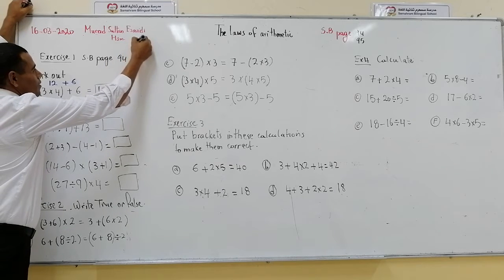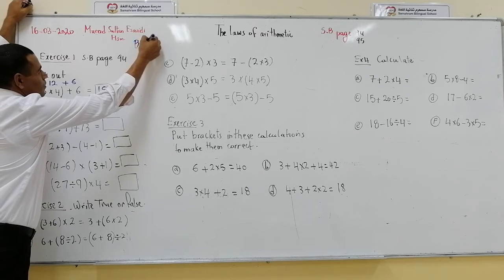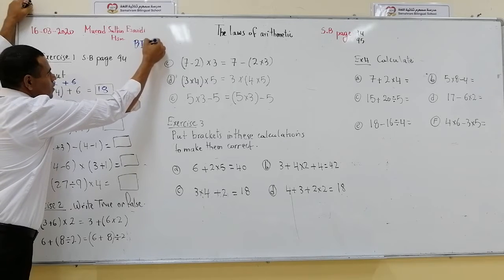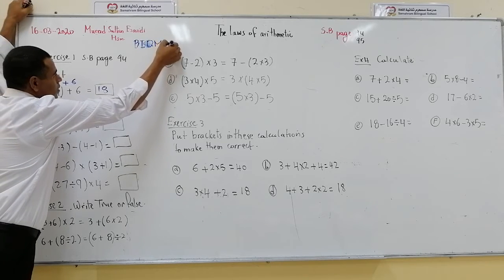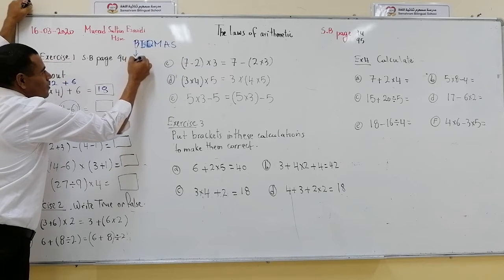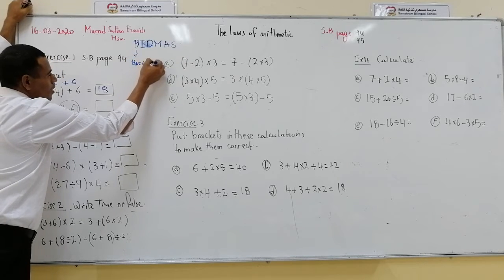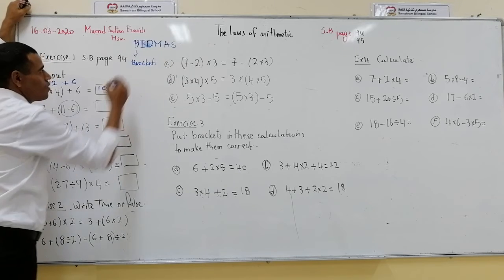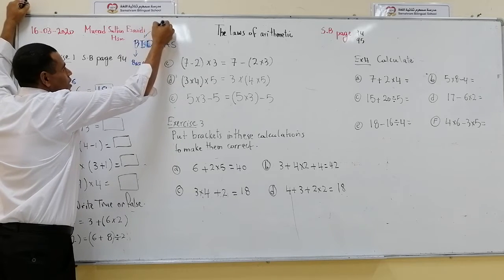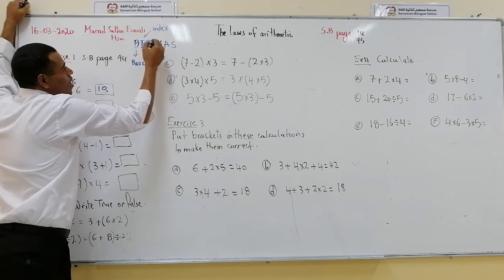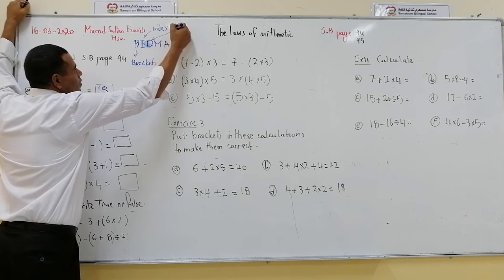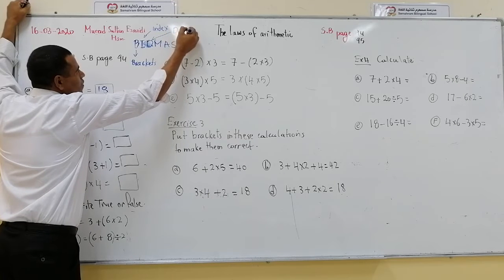Why? Because we use BIDMAS. B stands for Brackets — we calculate what is inside the brackets first. Then if we don't have brackets, we move to Indices. Then if we don't have an index, we move to Division.